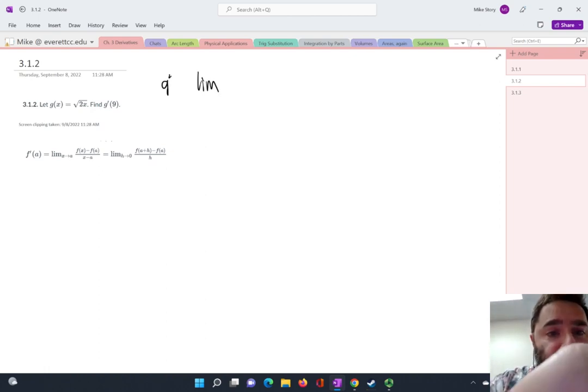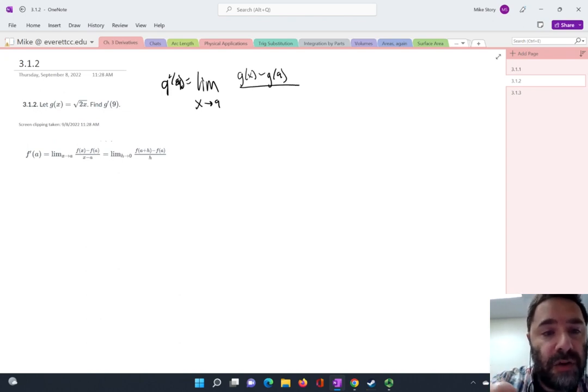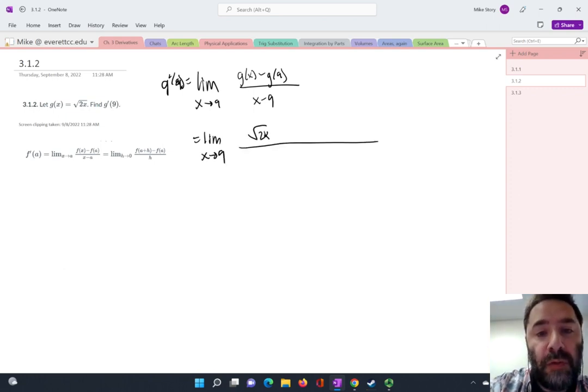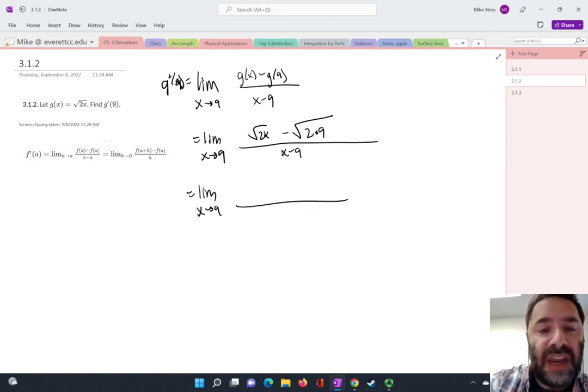To find g prime of 9, I'm going to take the limit as x approaches 9 of g of x minus g of 9 all over x minus 9. So we're going to have the limit as x approaches 9 of square root of 2x minus square root of 2 times 9 all over x minus 9. Simplifying, of course, just a tiny little bit, we're going to have square root of 2x minus square root of 18 over x minus 9.